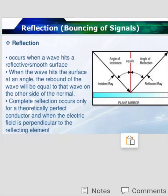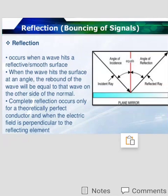Reflection occurs when a wave hits a reflective or smooth surface. When the wave hits the surface at an angle, the rebound of the wave will be equal to the wave on the other side of the normal. Reflection can occur only when the respective medium is smooth or reflective.